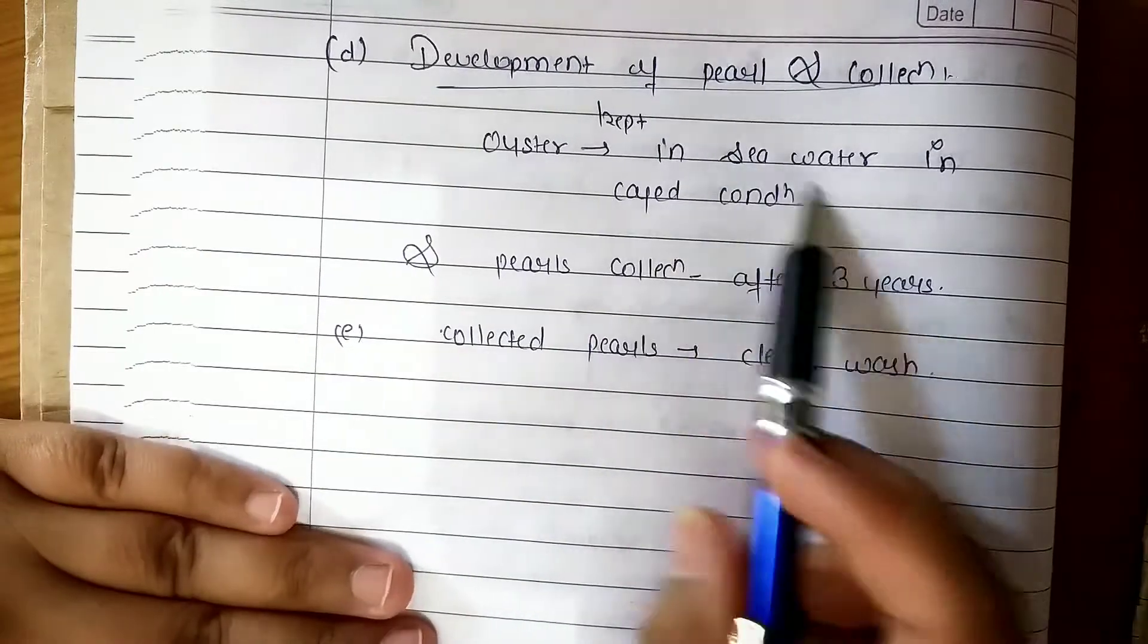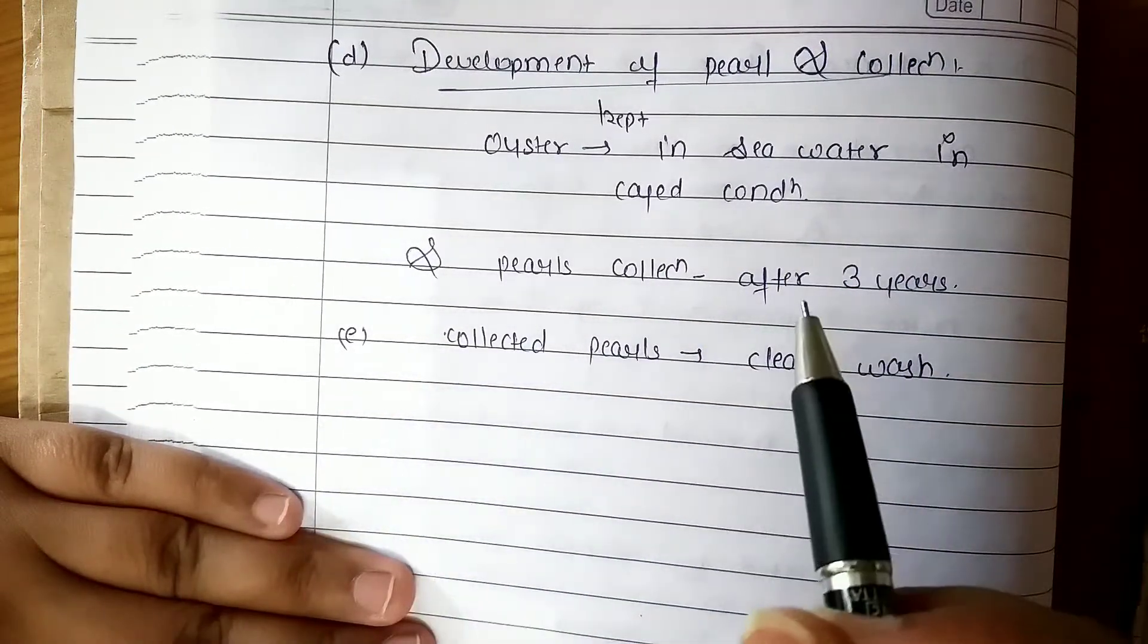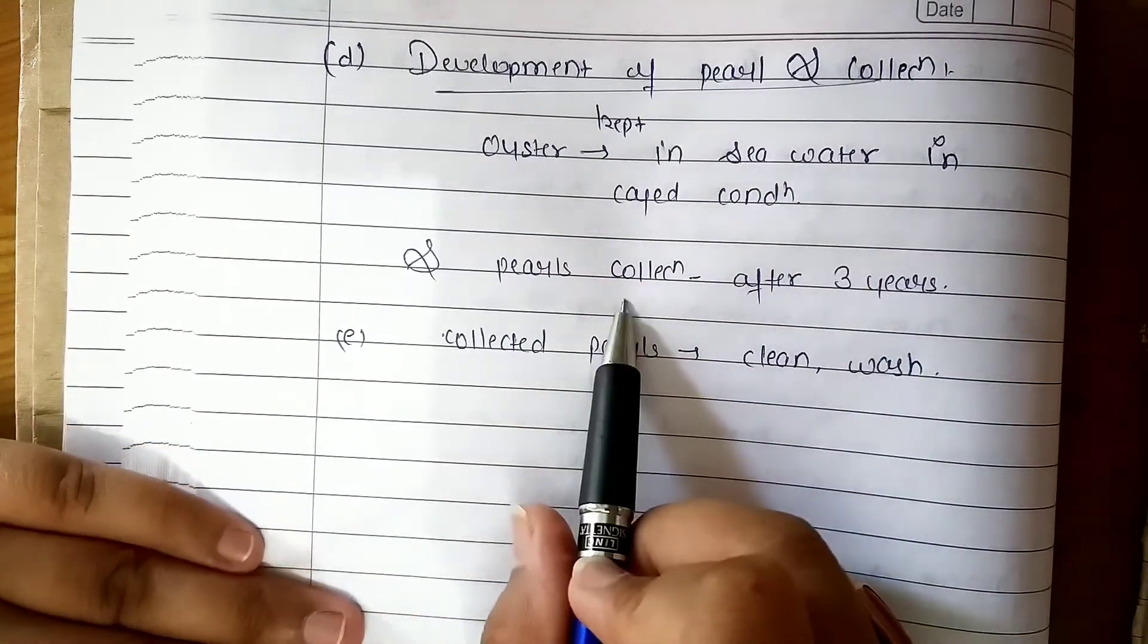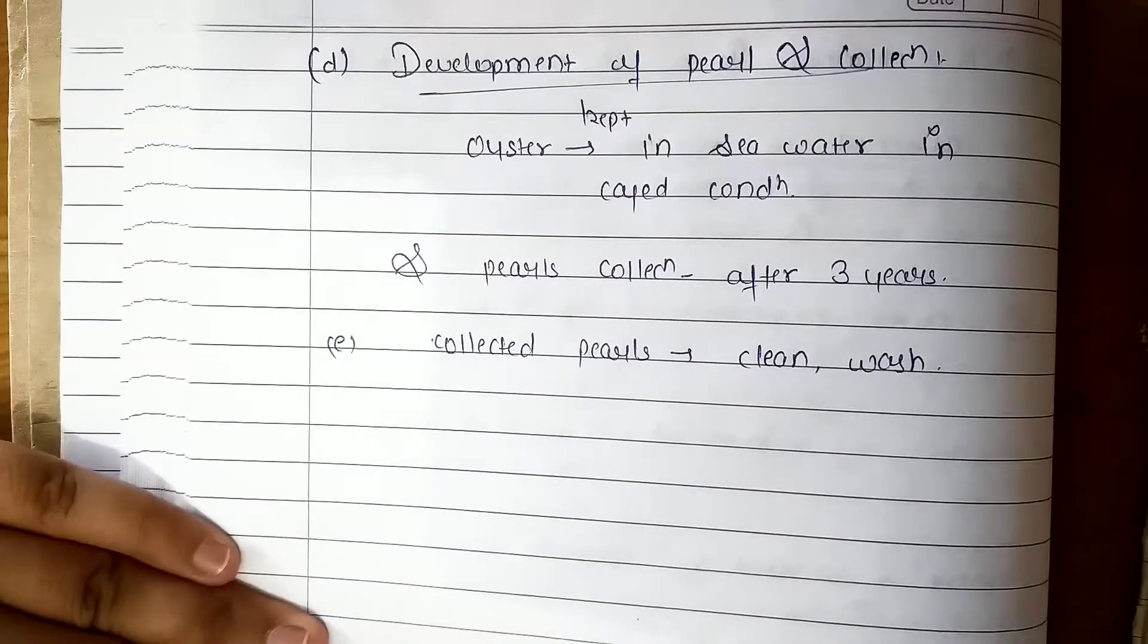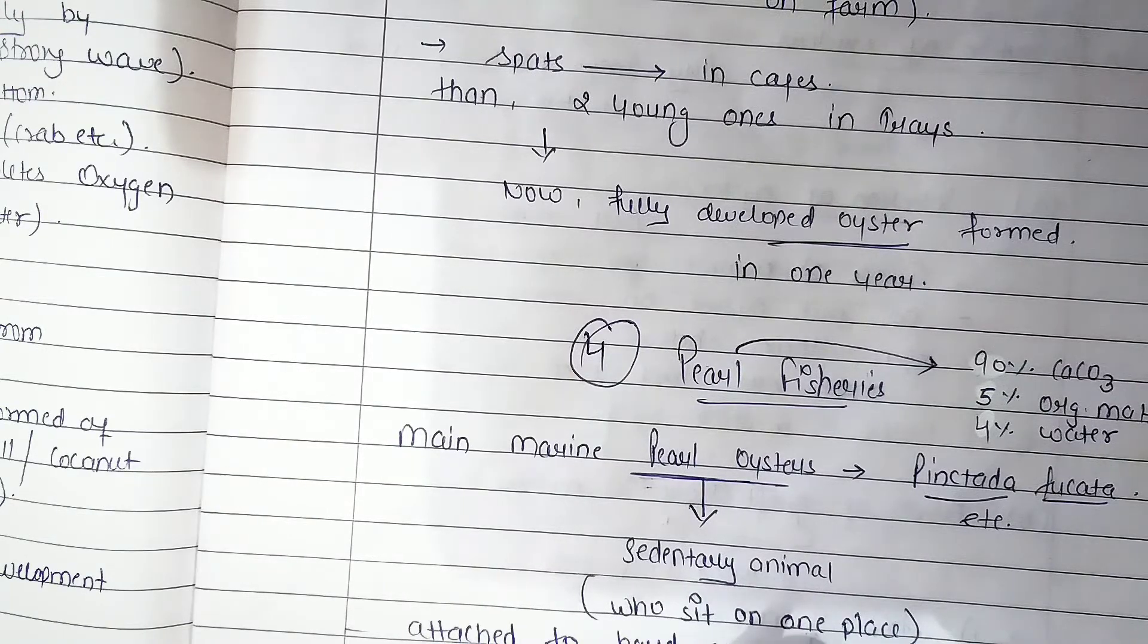We will not open it in a cast condition. After three years, we get the pearl collection. Then we clean, wash, and use them. This is our pearl fisheries, our brackish water culture chapter.